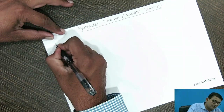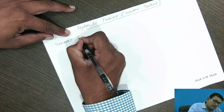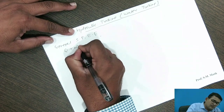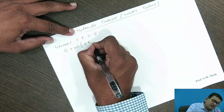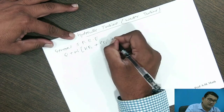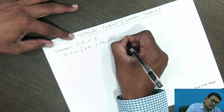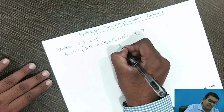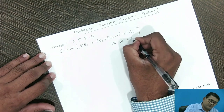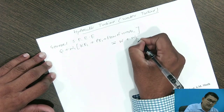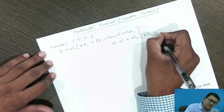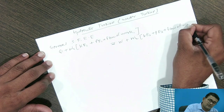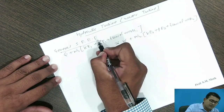For this hydraulic turbine or water turbine, the general Steady Flow Energy Equation (SFEE) is: Q plus mass times bracket — kinetic energy at inlet plus potential energy at inlet plus flow work at inlet — equals work done plus mass times bracket — kinetic energy at exit plus potential energy at exit plus flow work at exit. This is the general steady flow energy equation.